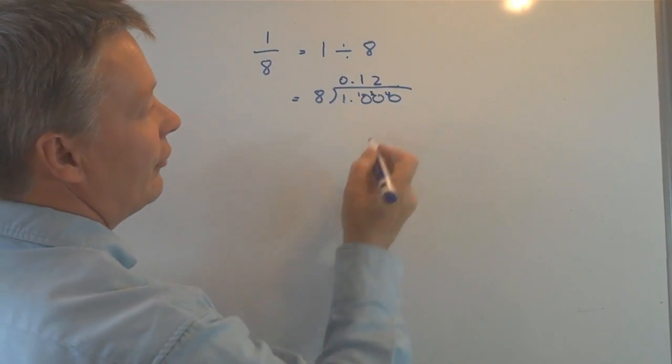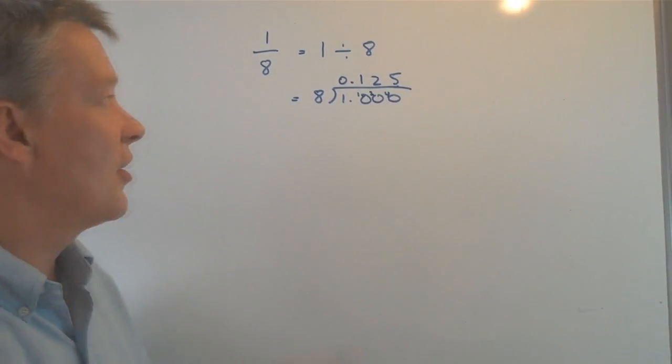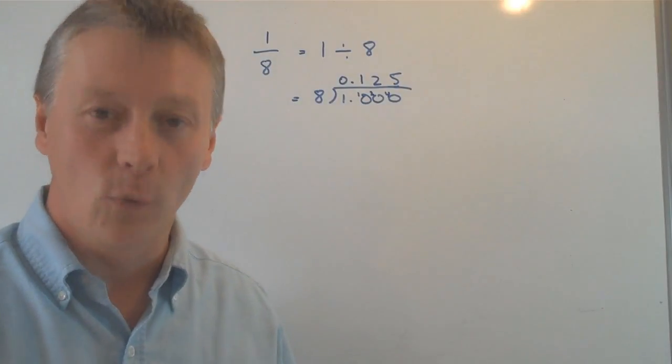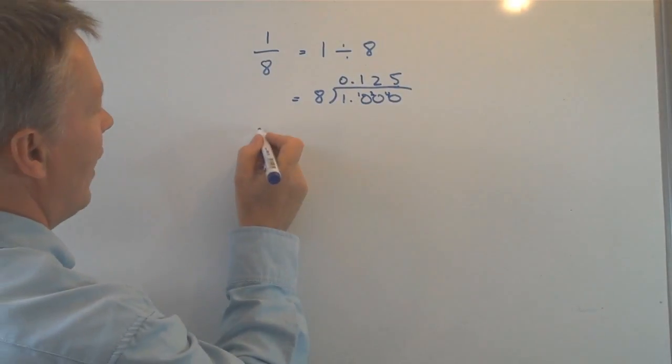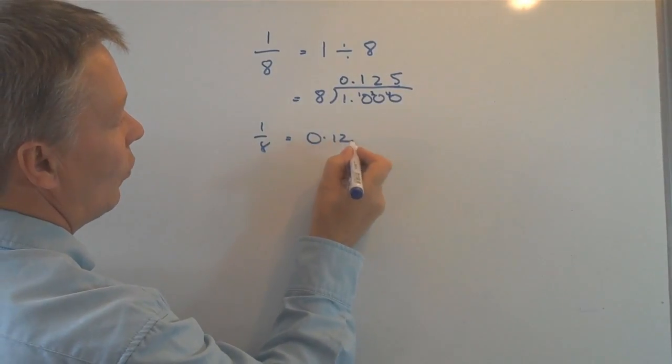How many lots of eight are there in forty? Well, there's five. Okay. So, in other words, the direct decimal equivalent of one-eighth is exactly 0.125.